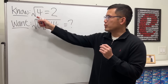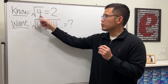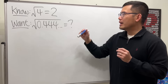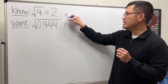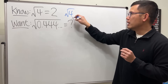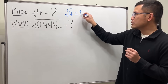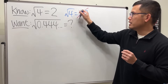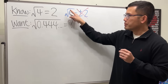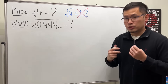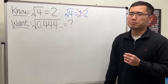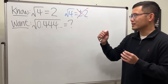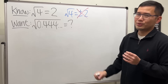First, I told you guys that we know square root of 4 is equal to 2. If you say square root of 4 equals plus or minus 2, this is actually incorrect. Because the symbol means just give the positive square root — the principal square root.